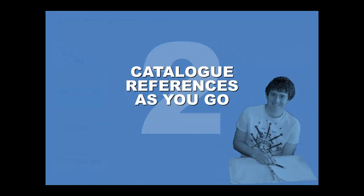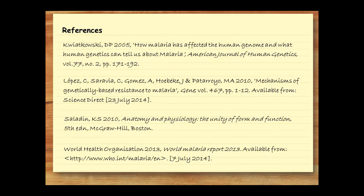Another useful tip is to catalogue your references as you go. Do this on a separate page at the end of your text — write 'References' at the top, and then expand on each of your earlier citations. With the UWA Harvard citation style, each reference begins with the first listed author's family name, and you can put the list as a whole in alphabetical order. There are no numbers, bullet points, or indents — just a single space between entries.